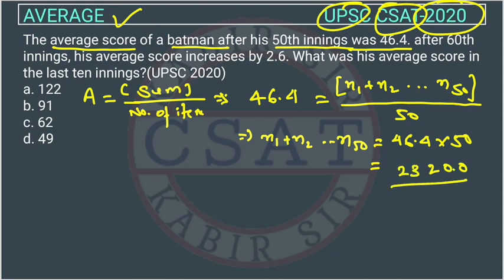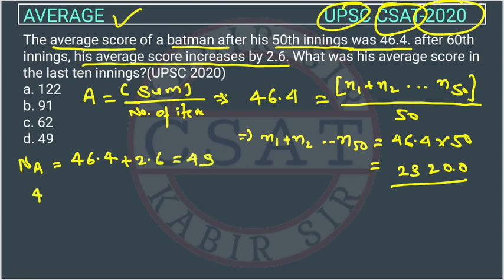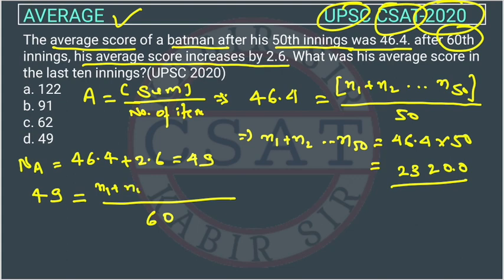Now the second condition: his average score increased by 2.6. So the new average is previous average plus 2.6, which gives us 49. This average of 49 is after his 60th inning. So now we have N1 + N2 + ... + N50 + N51 + ... + N60, and there are 60 innings played by the batsman.